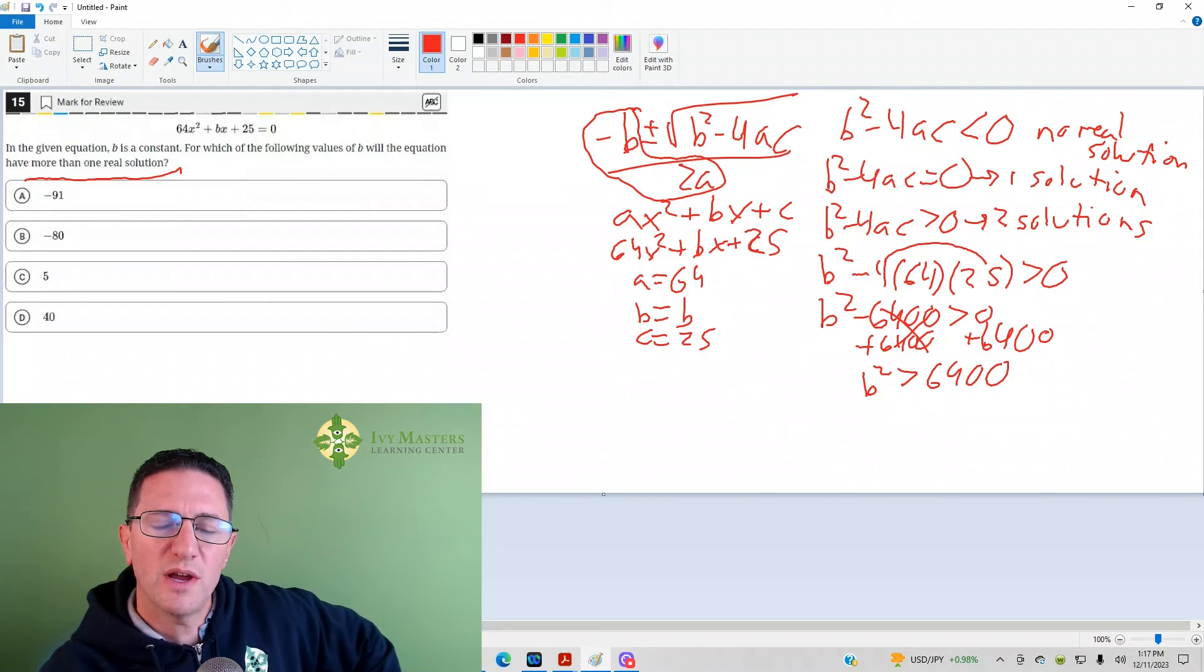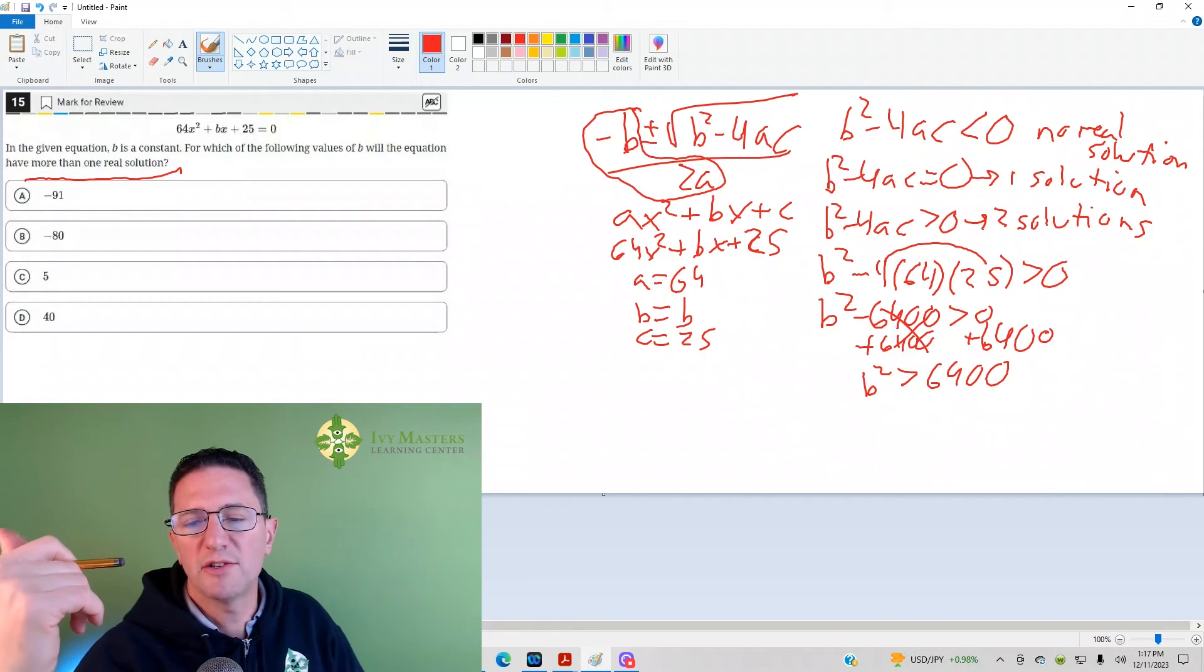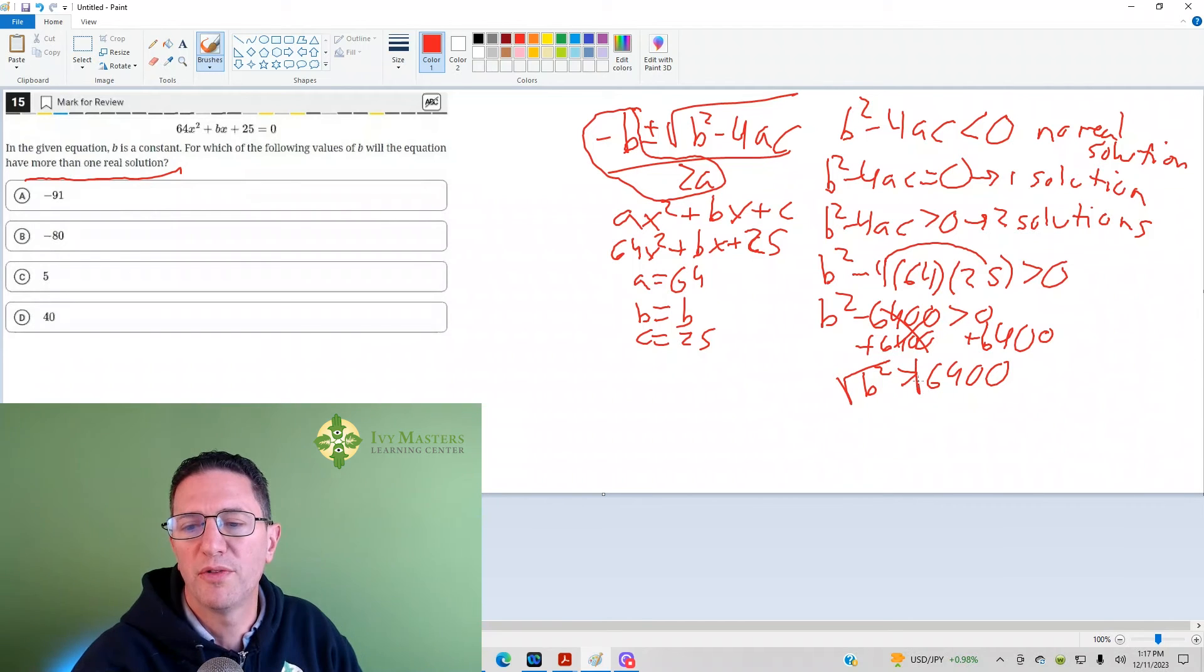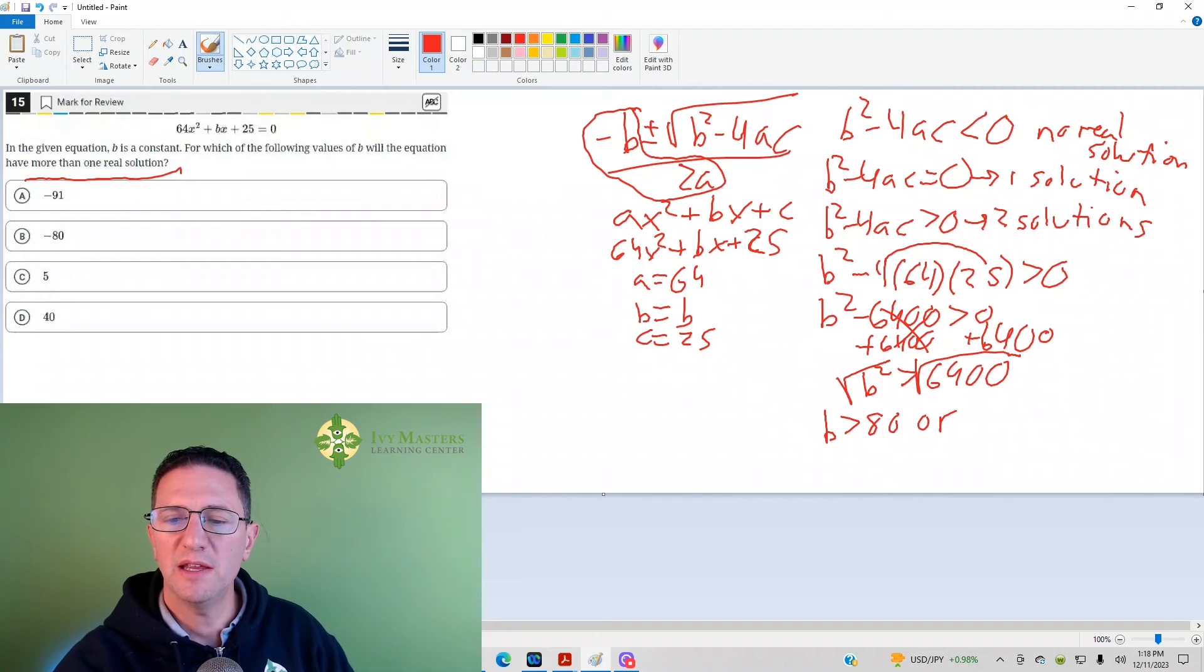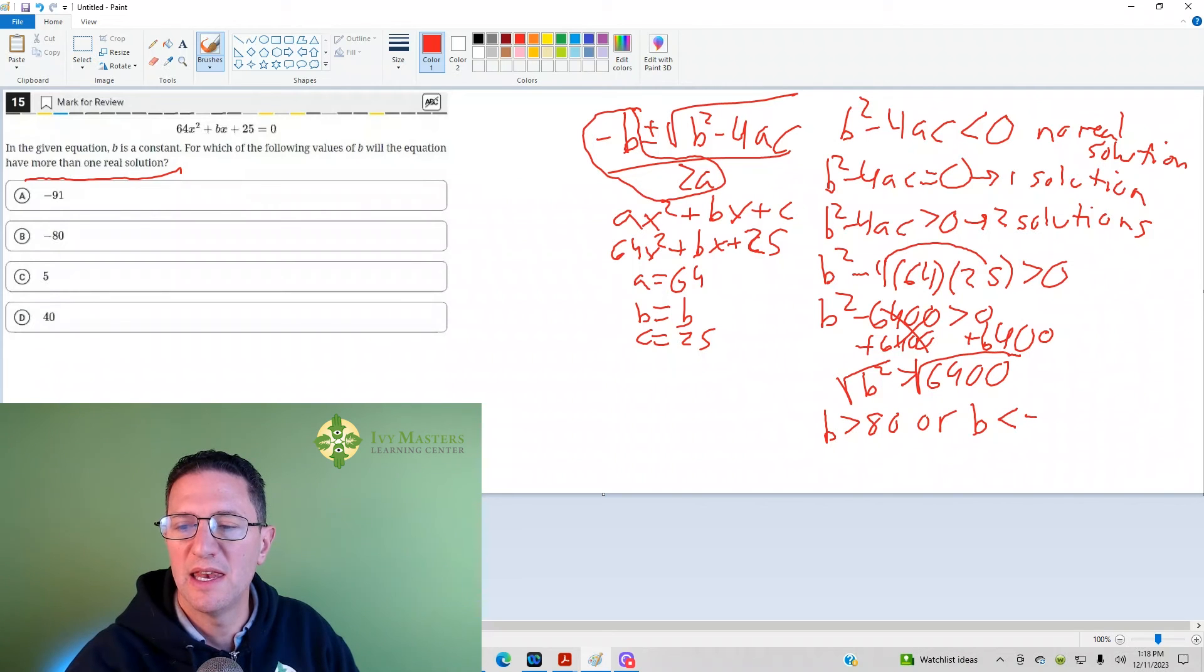What you might notice, you've got b squared. So your answer here is going to be plus minus. If I take the square root of both sides, then it winds up being b is greater than 80. Or if you take the negative, then you also have to flip the sign. Or b is less than negative 80.